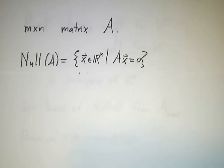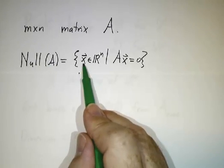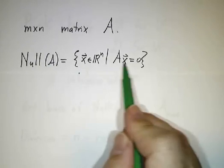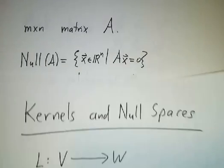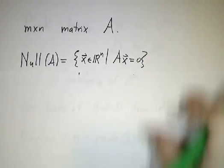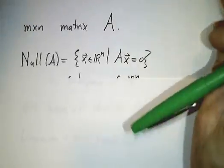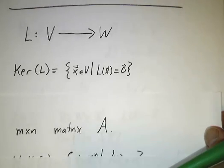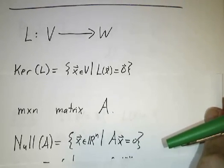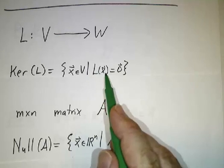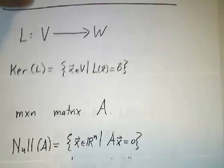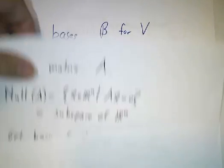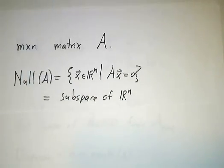Then the null space of that matrix is a set of all vectors in Rⁿ such that Ax equals zero. And you'll notice that the definition of a null space is awfully similar to the definition of a kernel. In one case, you want the matrix times x to be zero. In the other case, you want L of x to be zero. But it's the same sort of game.